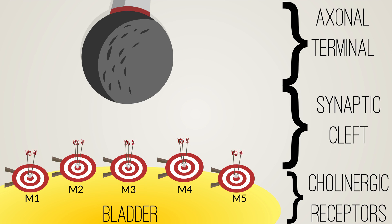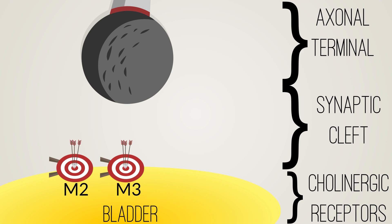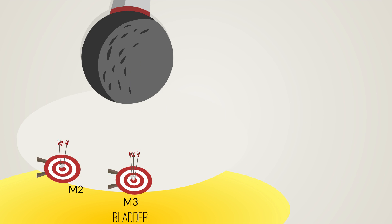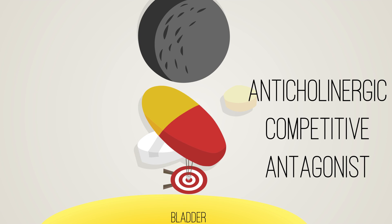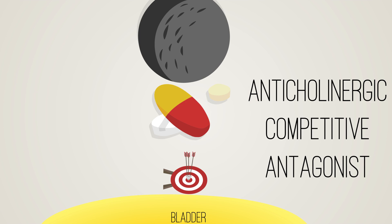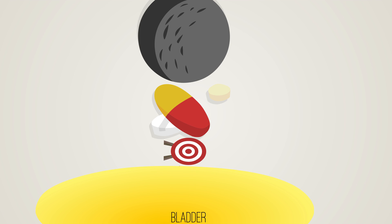Look closer at the postganglionic parasympathetic detrusor fibers that diverge and store neurotransmitters. The chief neurotransmitter is cholinergic. There are five cholinergic receptor subtypes named M1 through M5. Only M2 and M3 are highly concentrated in the bladder. M2 is more prevalent, but the M3 receptors are responsible for detrusor contraction. Activation of M2 receptors negatively affects adenylate cyclase, therefore decreasing cyclic AMP release and ultimately inhibiting relaxation. Anticholinergic drugs block this process.